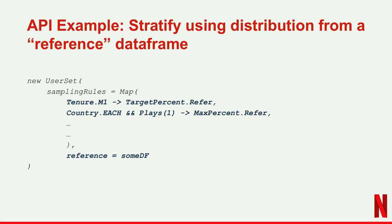We also have a convenient way to refer to a distribution that exists in a different dataset. Sometimes the developer is not clear about the exact percentage they're looking for in each rule, so they might refer to a distribution in a slightly different dataset. We have a parameter called reference where you can pass in a different DataFrame, and the stratification library will calculate statistics on it and replace all the target_percent.refer values with the corresponding percentage that exists in the other DataFrame.